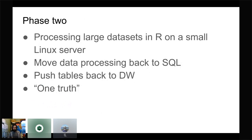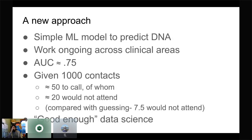We're right in the middle of phase two at the moment, and what I'm talking about today is the green shoots of phase three. Phase two is much like phase one — we're still processing very large data sets in R on a small Linux server, which is not computationally sensible. But we've been trying to move some of the data processing back to SQL, pushing computed values back to tables in the data warehouse — partly because computation is easier in a big SQL environment, but more fundamentally because we want to have one truth, or at least one set of truths, and avoid having different definitions of things.